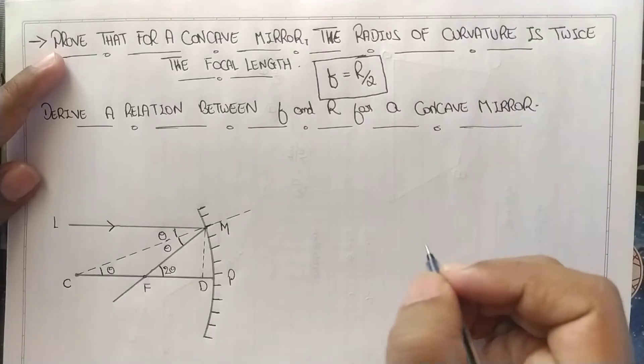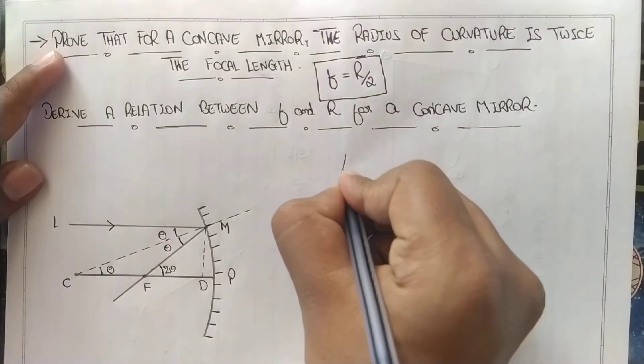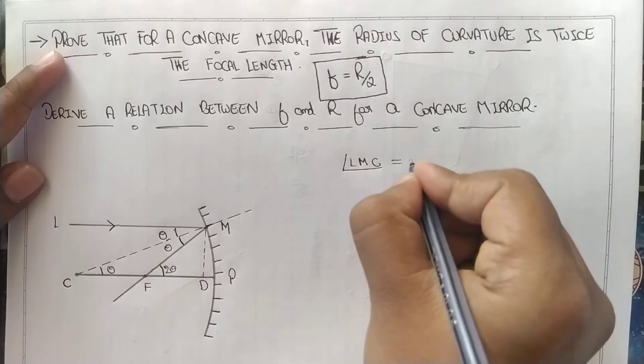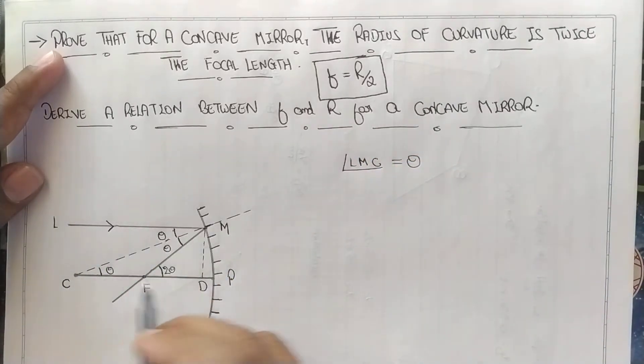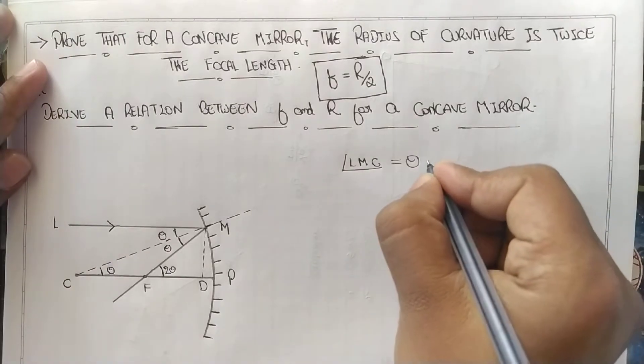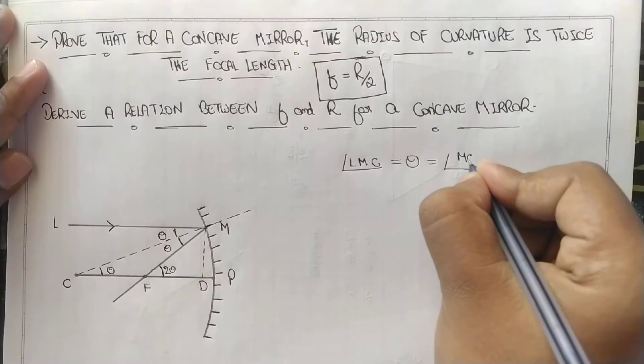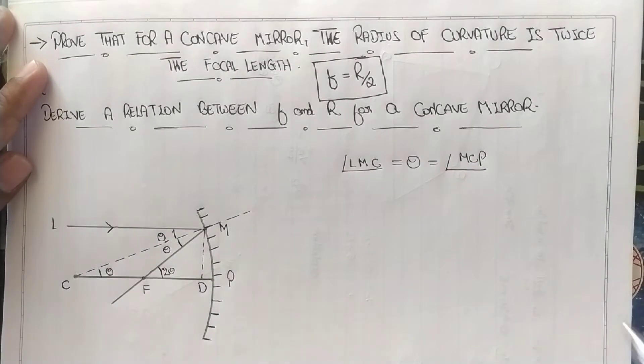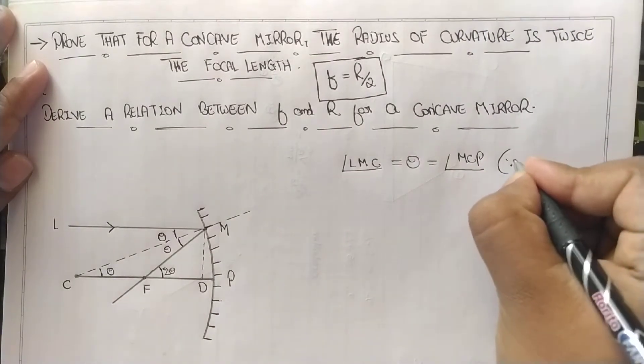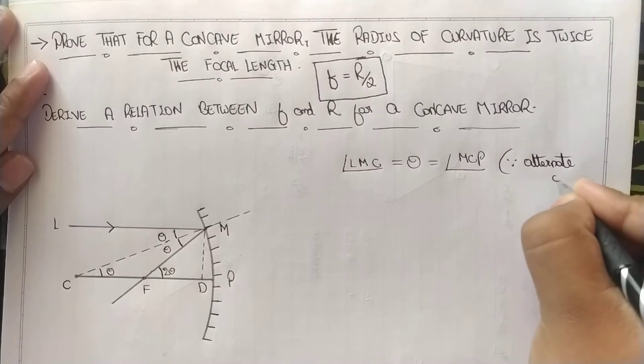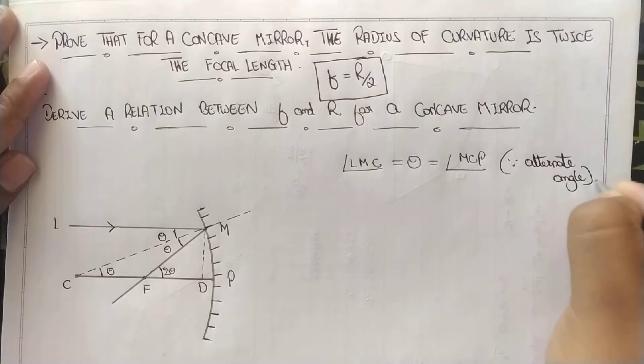Moving further, as I said, angle LMC equals theta. You can see here LMC equals theta, so this is also equal to MCP. Why is this? As I told you, this is because of alternate angles - basic geometry.